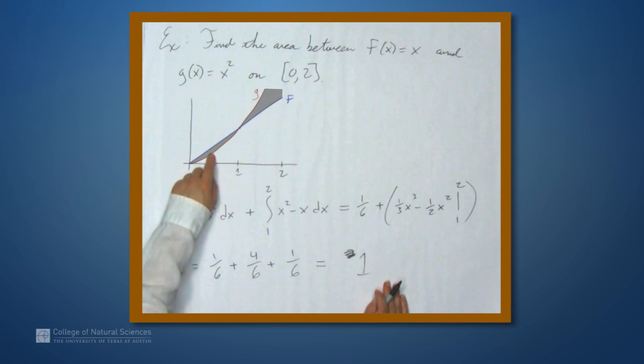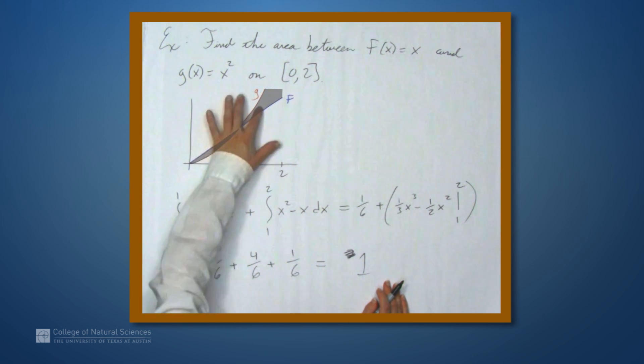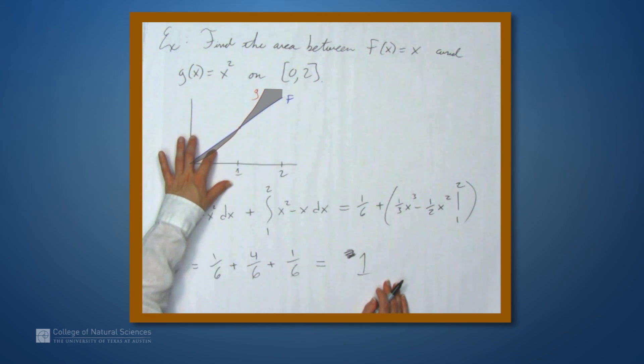So when we split this into two integrals, we have this area plus this area. And in this case, all the area, the area between these two curves is always considered positive. So we don't have negative area above the x-axis. So that's how you find the area between curves.